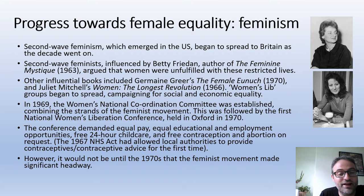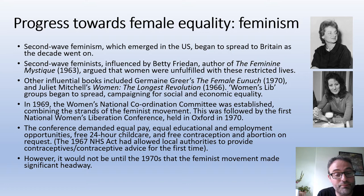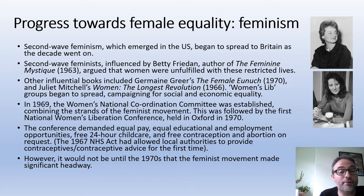At that conference the British feminist movement set out its demands: equality in education and employment, free 24-hour childcare, and reproductive rights — free abortion on request and free contraception. There had been a little progress in 1967, where under the terms of the NHS Act local councils had to provide contraception and advice on contraception for the first time. But the women's lib movement said this ought to be just the beginning.